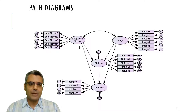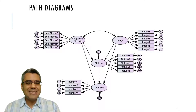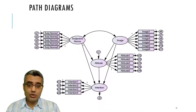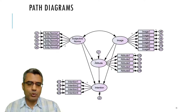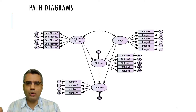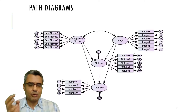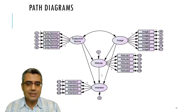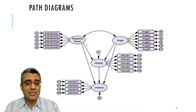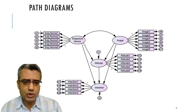By measurement model I mean the construct and how you measured it. The structural model refers to the relationship between the constructs — the hypotheses. For example, the relationships between subjective norms, attitude, intention, and image are within the scope of the structural model. So we have two types: measurement model, which is about how you measure each construct, and structural model, which is about testing hypotheses — the direct and indirect relationships between constructs.